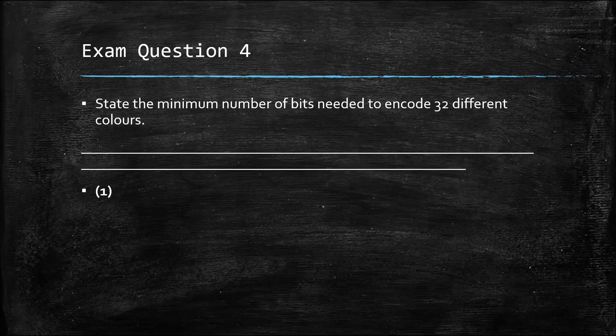Exam question four: state the minimum number of bits needed to encode 32 different colors. We need to reach 32 using powers of two: 2 (first), 4 (second), 8 (third), 16 (fourth), 32 (fifth). So five bits are required to encode 32 different colors.